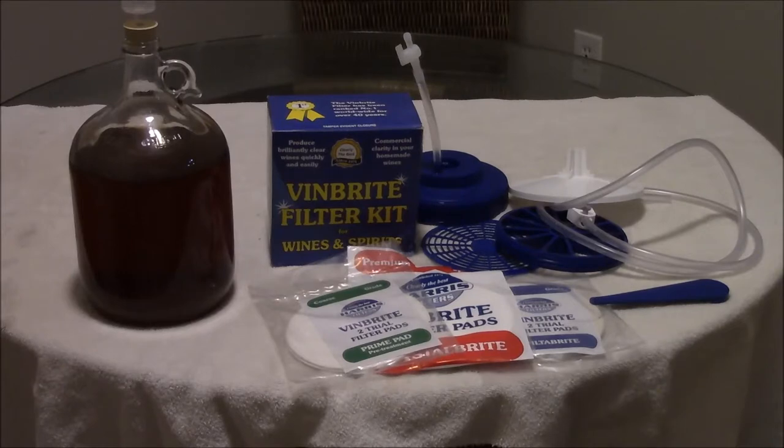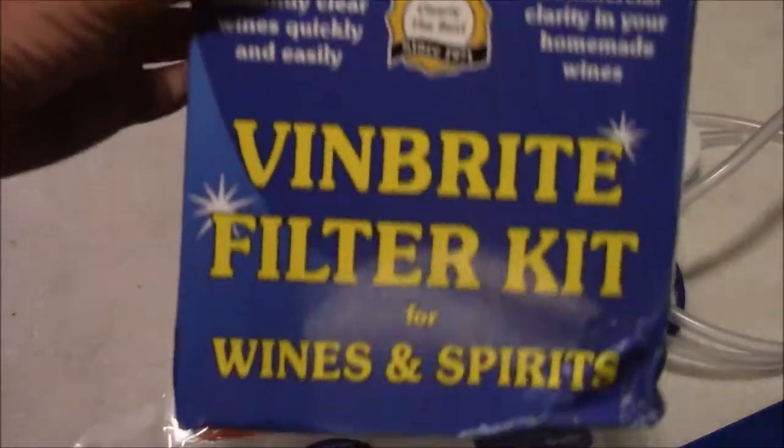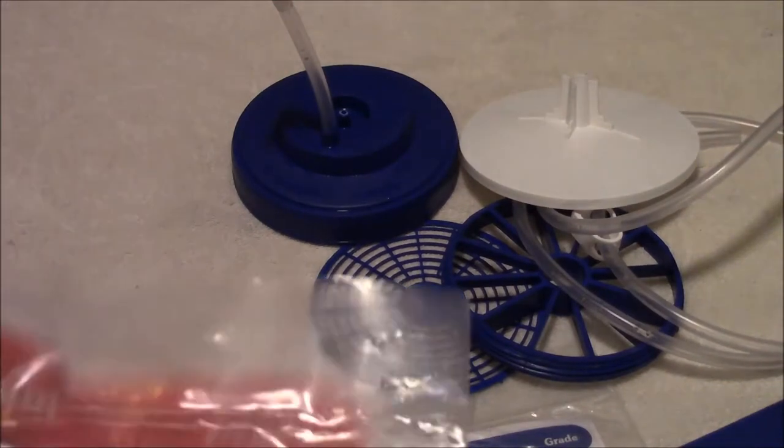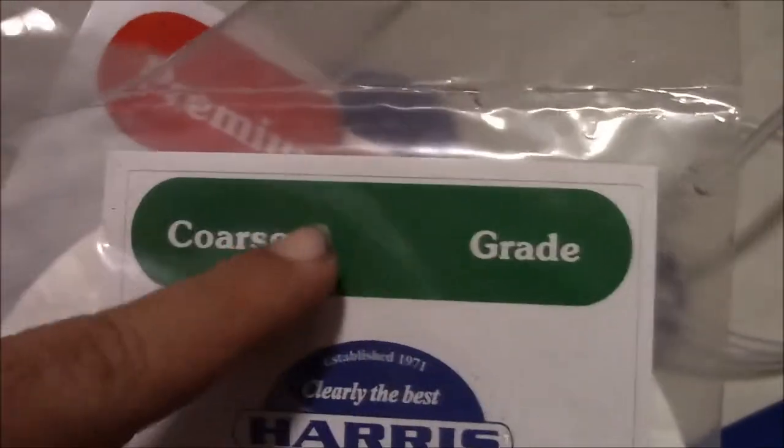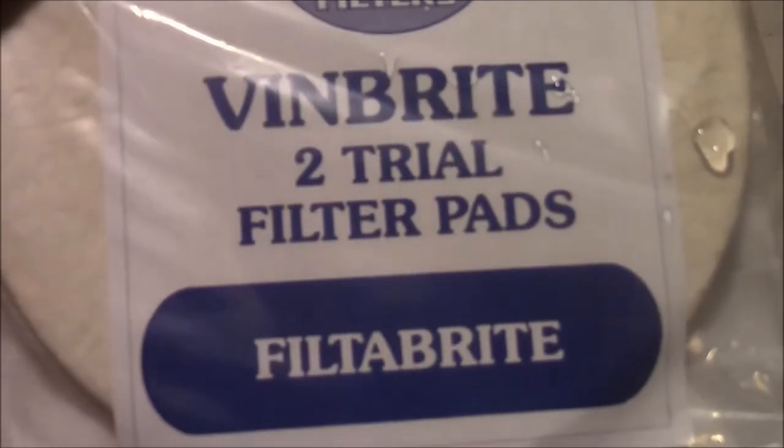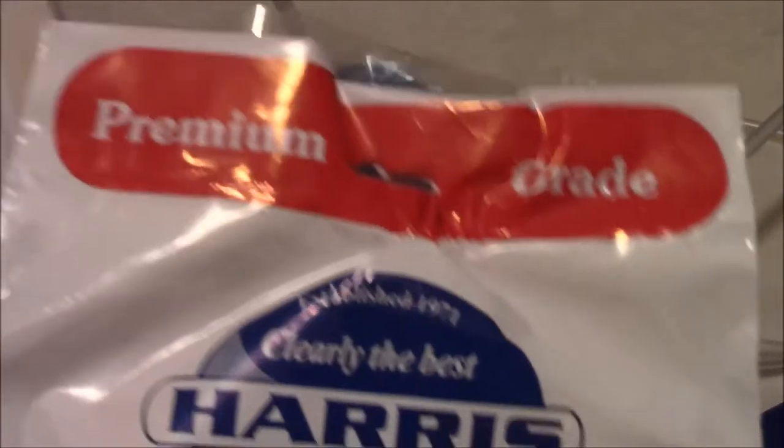Let's take a closer look. This is the box that it ships in. This can be purchased from Amazon. The pads, some of them come with them and some of them you have to buy. There's different grades. You can see this one is a premium grade, this is a coarse grade, and this blue type here is a very fine grade called a filter bright pad.